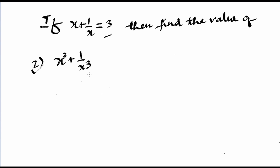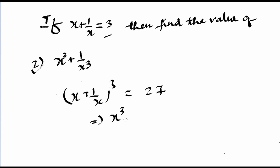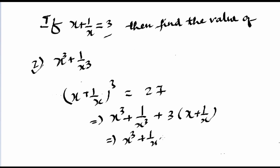Now we will see how to solve x cube plus 1 by x cube. Just as we squared both sides for the x² case, for x cube plus 1 by x cube we will cube both sides: (x + 1/x)³ = 3³ = 27. This gives a³ + b³ + 3ab(a + b), and the 3ab term becomes 3 × 3 = 9. So x cube plus 1 by x cube plus 9 equals 27, giving x³ + 1/x³ = 18.